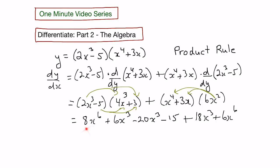So, collecting like terms, 8x to the sixth and 6x to the sixth gives us 14x to the sixth. 6x cubed minus 20x cubed plus 18x cubed gives us positive 4x cubed and we're left with minus 15. And there you go. There's the derivative.